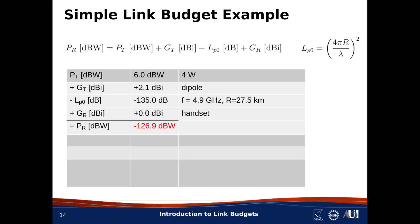Now, to get the received power, all we need to do is add up the terms. We get minus 126.9 dBW. If this calculation was all we wanted to do, then there really wouldn't be much advantage doing it this way over just fiddling around with the original equation. The utility of a proper link budget is in facilitating analysis and design in a convenient way, and in particular, clearly seeing how different factors affect overall performance.